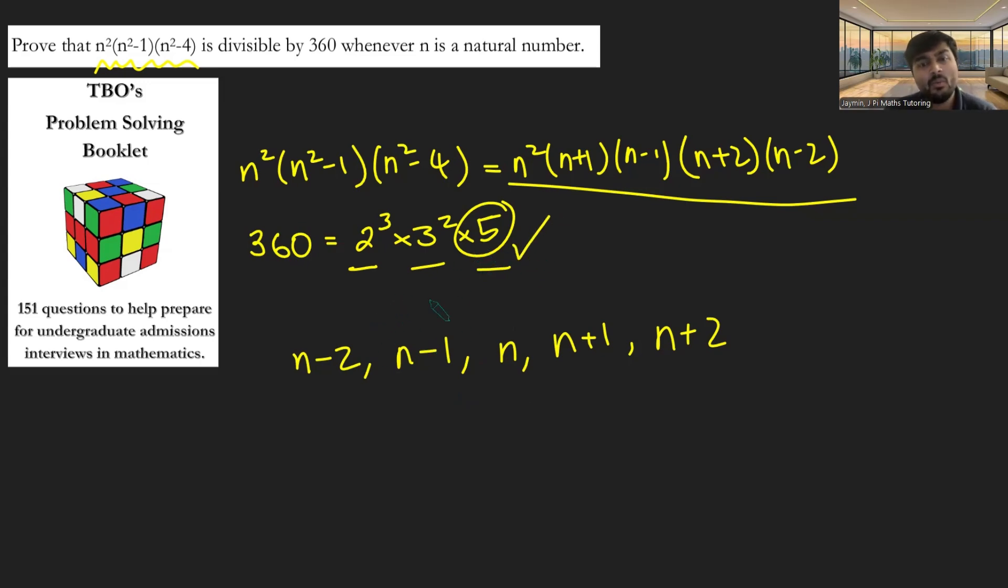What about the 3 squared? Well, if n minus 2 is a multiple of 3, well, then so is n plus 1, and those guys will be contributing a 3 term. So that will give me 3 squared. What if n minus 2 is not a multiple of 3? Well, then maybe n minus 1 is, in which case n plus 2 will also be a multiple of 3, and we'll get, again, a 3 squared term.